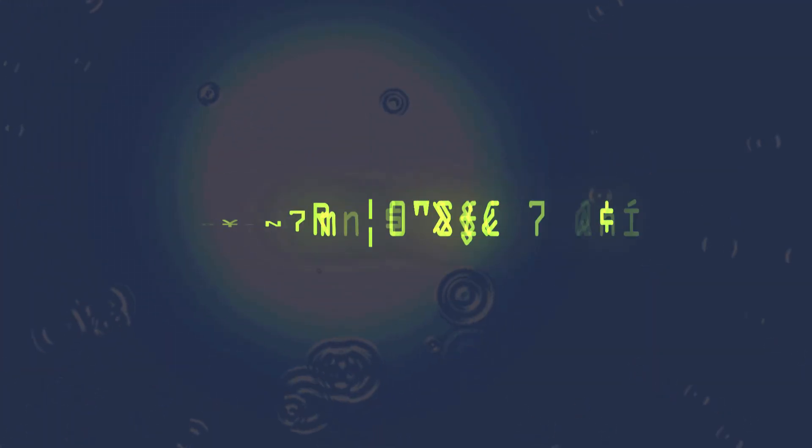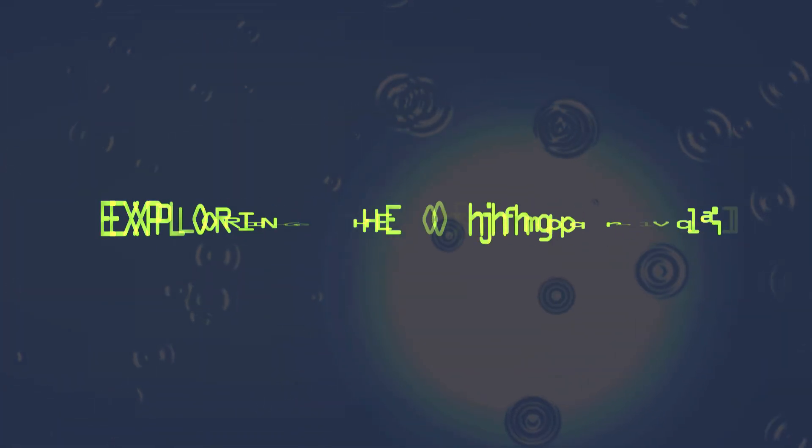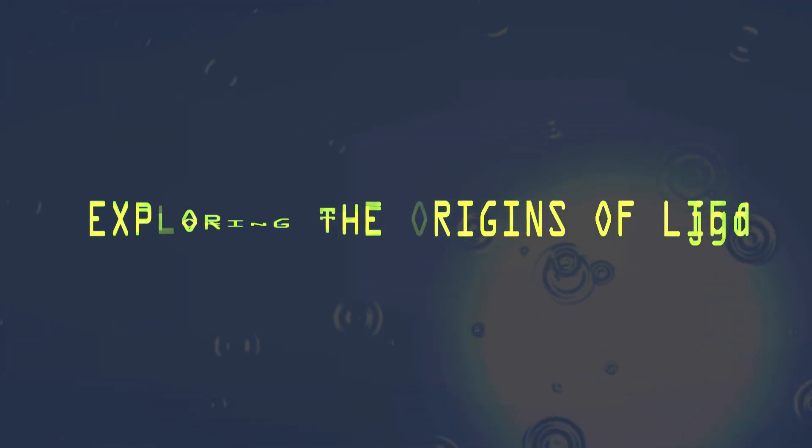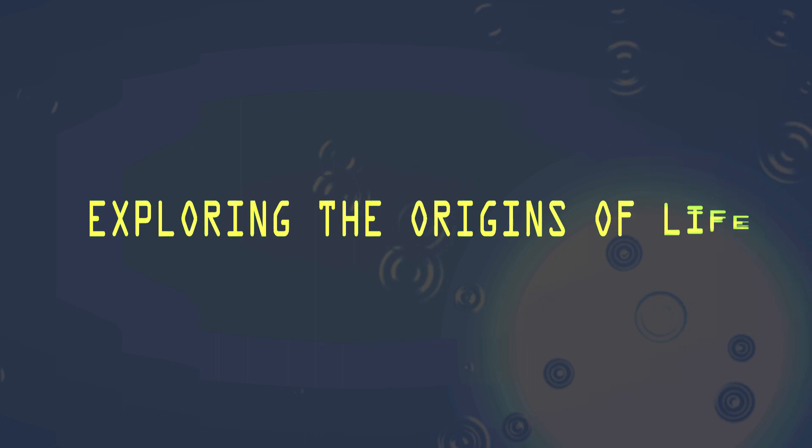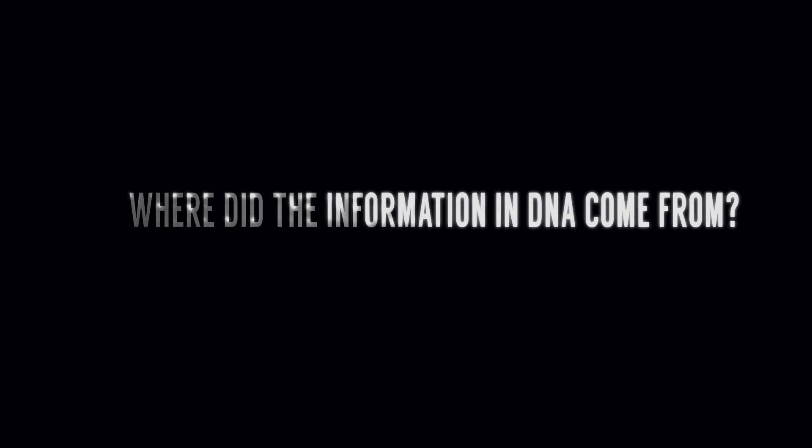Welcome. We're going to show you a little bit of this complexity, and the big question we're going to ask is: where did this information come from? If you're starting from zero, could this information have come about by chance? Natural selection? All right, so let's watch this animation.